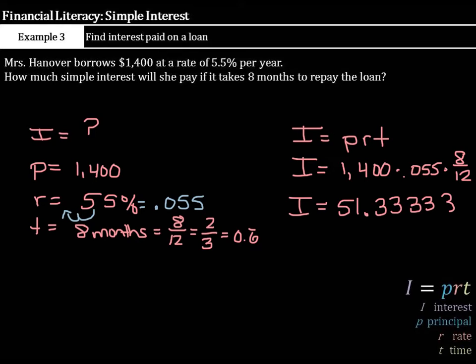Now, to finish this, let's look at our pennies place, or also known as our hundredths place, and the one next to it. Is the 3 in the thousandths place going to round the 3 in the hundredths or pennies place up? No. So, our final answer is interest equals 51 and 3 hundredths, or, since we're dealing with money, $51.33.